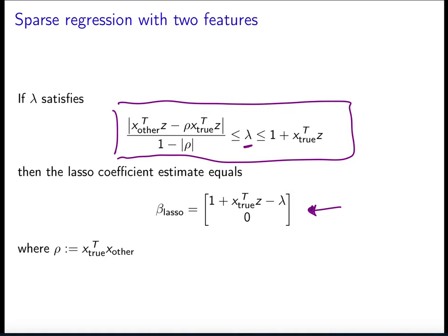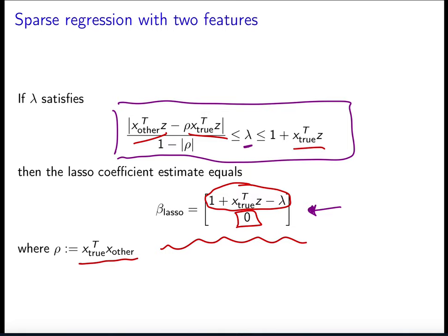What's interesting is that the lasso estimate is sparse — the second entry is zero and the first entry has the right sign. So basically model selection is performed well. The lasso estimator actually allows us to realize that the relevant feature is the first one. The expression depends on the correlation between the features and the correlation between the noise and each of the two features.